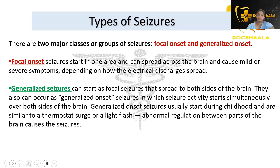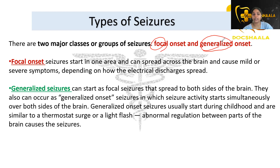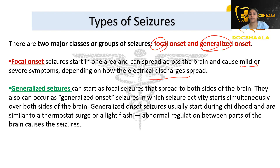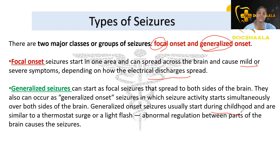There are two major classes of seizures: focal onset and generalized onset. Focal onset seizures start in one area and spread across the brain, causing mild or severe symptoms depending on the electrical discharge speed. Generalized seizures can start as focal seizures but are present on both sides of the brain, or they can begin simultaneously on both sides. They usually start during childhood.